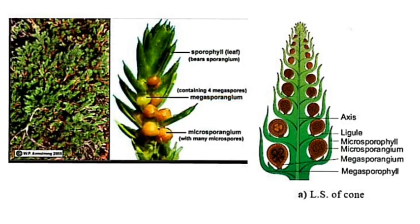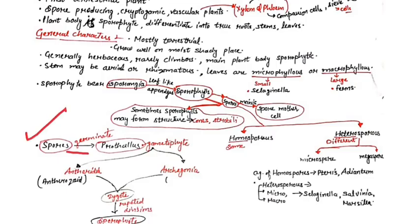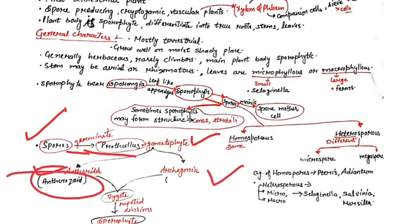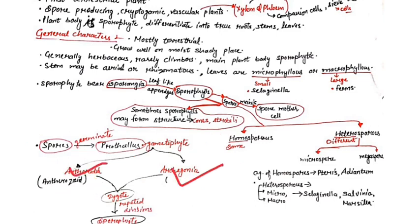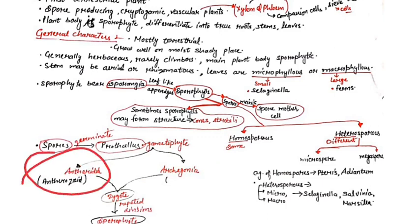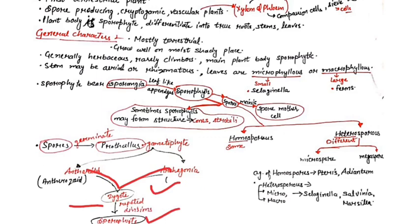When spores germinate, they form a prothallus structure. The prothallus is the gametophyte form. The gametophyte bears antheridia and archegonia. Antheridia produce antherozoids (sperm). Archegonia produce a single egg. Antherozoids fertilize the egg, forming a zygote, which by repeated division becomes a sporophyte.